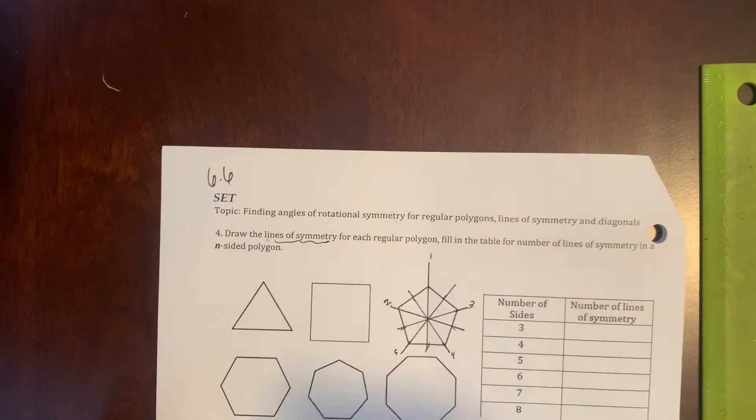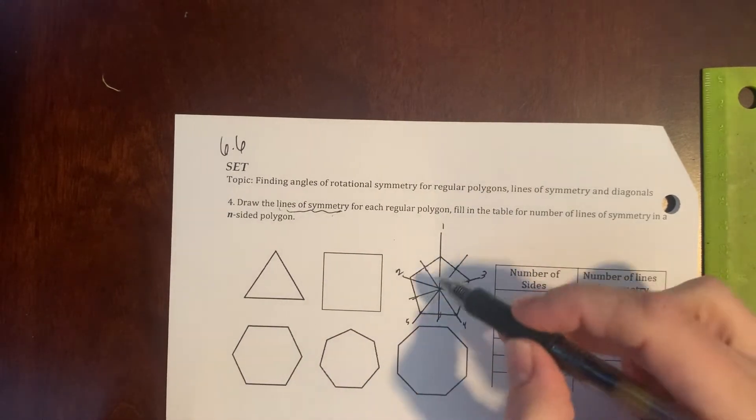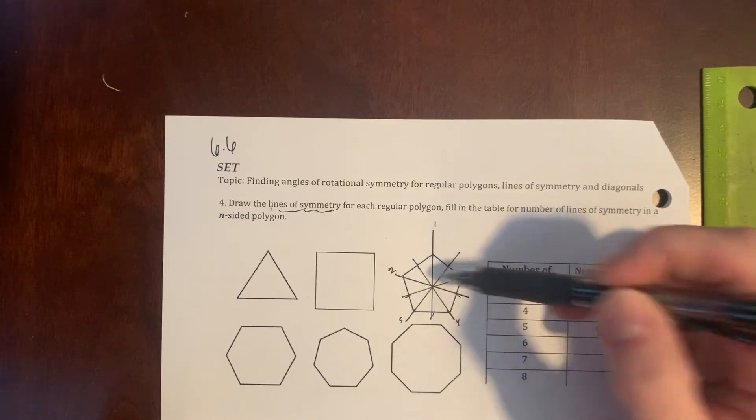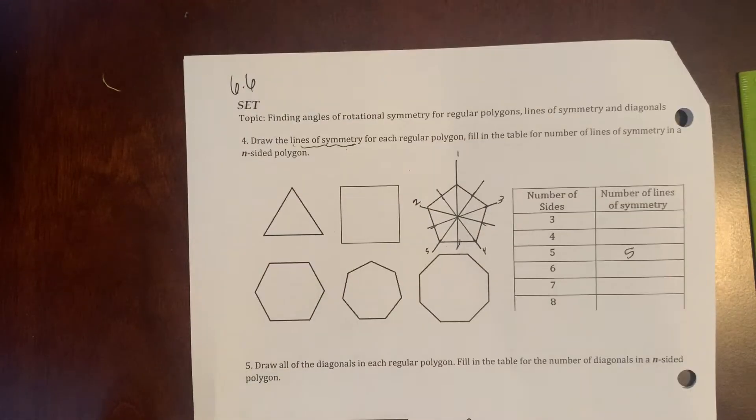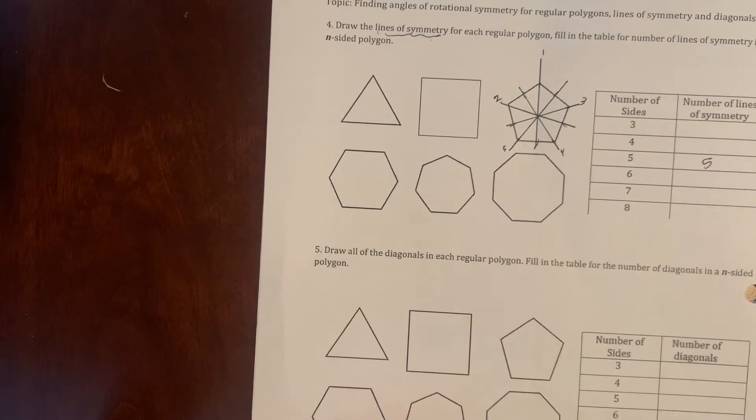And I'm numbering them just so I can count. So I have five lines of symmetry right there. I can't go vertice to vertice because it won't be equal on each side. But number five is draw all diagonals.